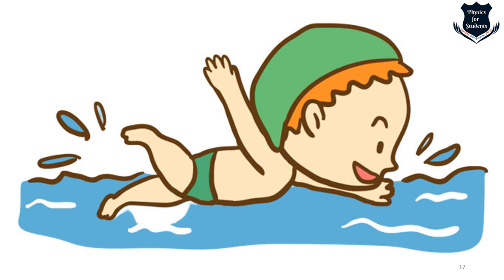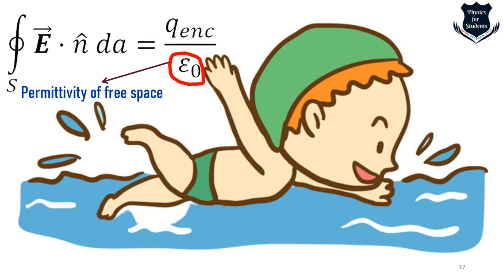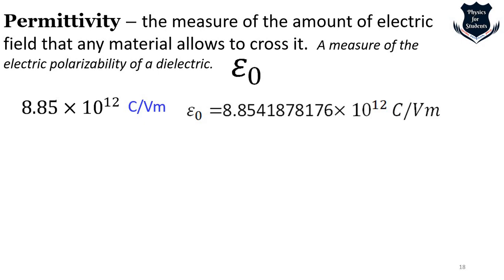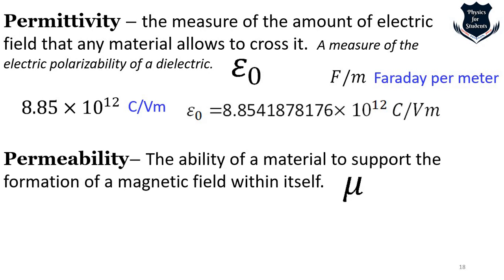Permittivity comes from the word 'permit.' It is the constant of proportionality between the electric flux on the left-hand side of Gauss's law and the enclosed charge on the right-hand side. This is the permittivity of free space, epsilon zero. It gives permission — a permittivity of a material actually depends on its response to an applied electric field. Permittivity measures the amount of electric field that any material allows to cross it, and is expressed in farads per meter.